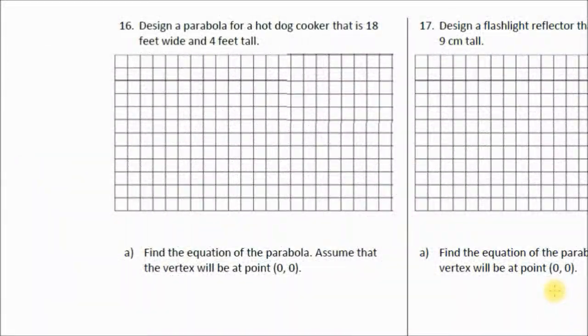Question number 16 on the test review 2 for unit 11. Design a parabola for a hot dog cooker that is 18 feet wide and 4 feet tall. Alright, let's just assume that every unit on our grid is a foot. So let's go through the steps to do this.